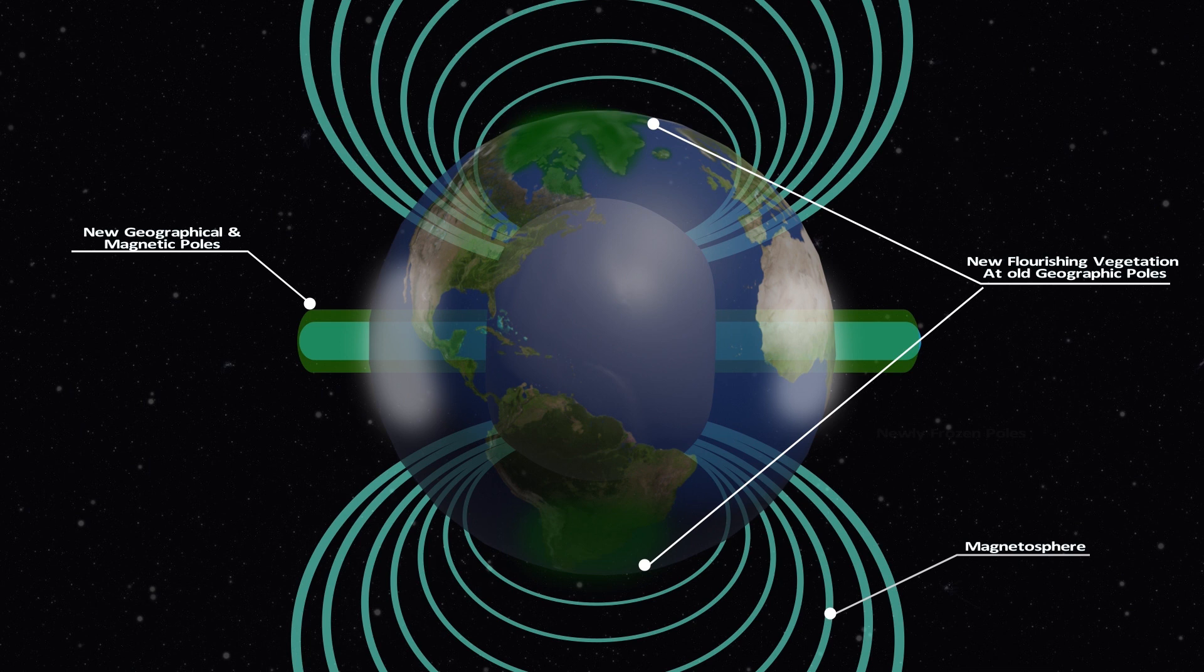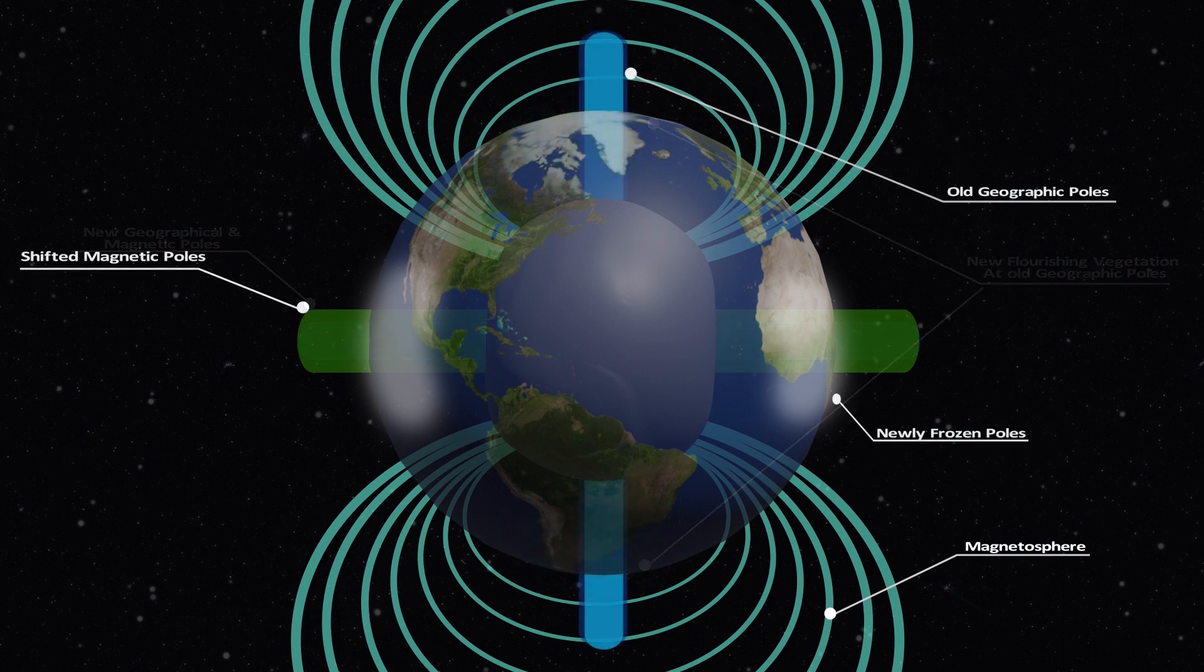However, this period of transition from the old geographic poles to the new geographic and magnetic poles would temporarily create four frozen regions on the planet, and would be a period of a mini ice age on Earth.